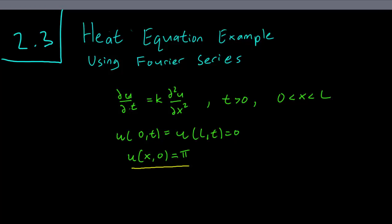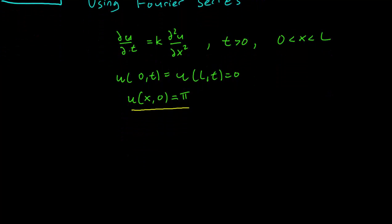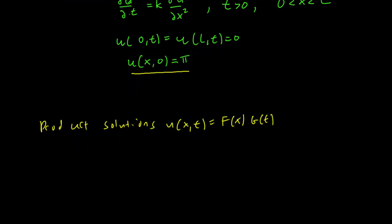So again we start with the product solutions. As you may recall, product solutions are solutions of the form u(x,t) equals f(x) times g(t), and we know that we can find that g(t) is going to be e^(-n pi over L squared kt) and f(x) is equal to sine(n pi x over L) for n equals 1, 2, 3 and so on, all the positive integers.